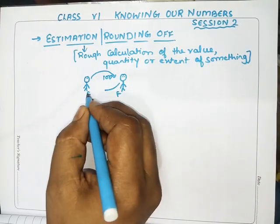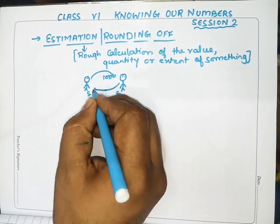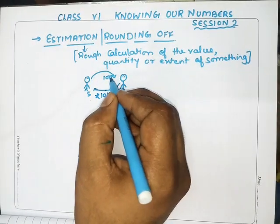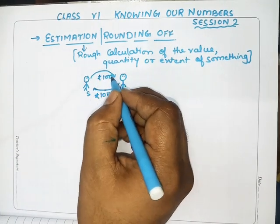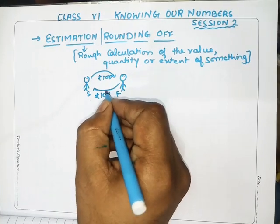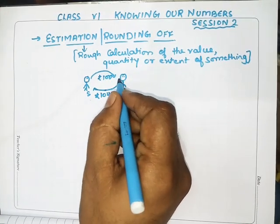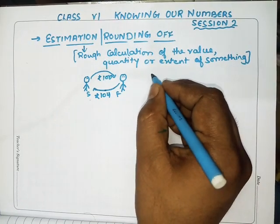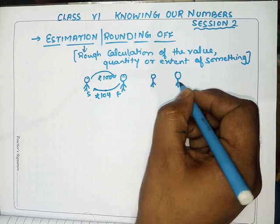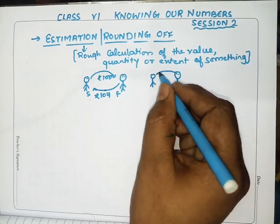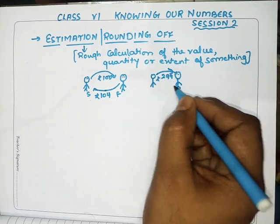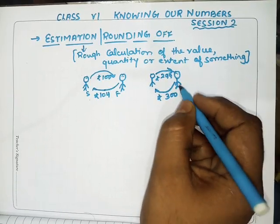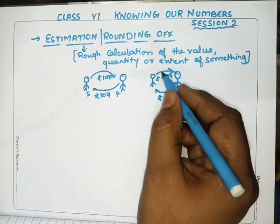For example, a friend borrowed 104 rupees from me. Since there's change involved, I returned 100 rupees — 100 is nearby to 104, so that's an example of rounding. Similarly, if a friend borrowed 299 rupees and returned 300 rupees — 1 rupee extra — that is rounding to the nearby value. 300 is nearby to 299, which is called rounding of numbers.